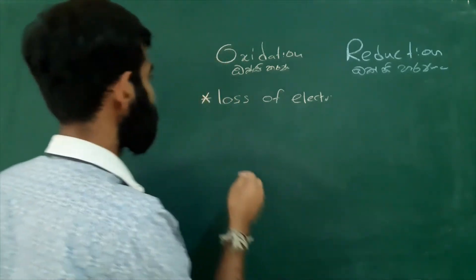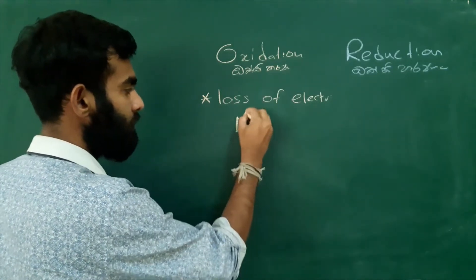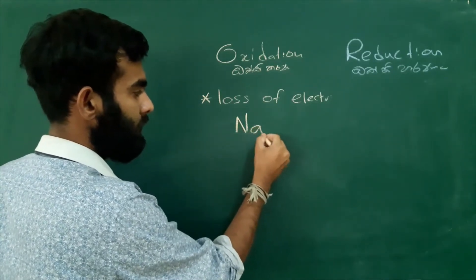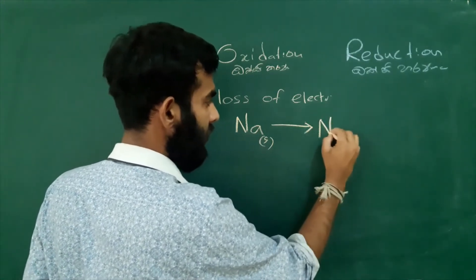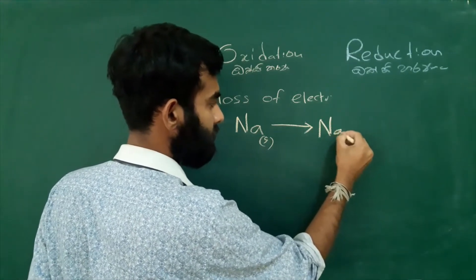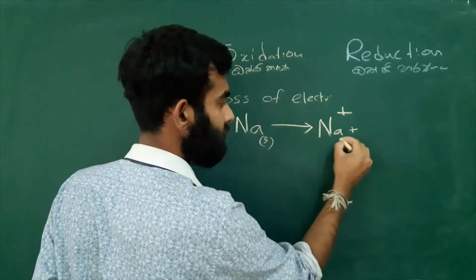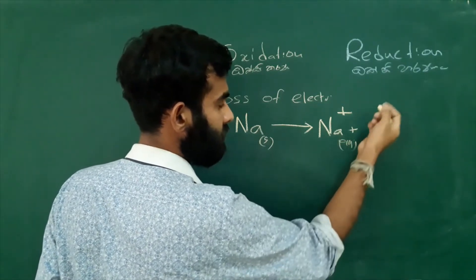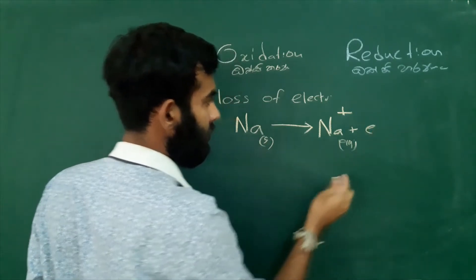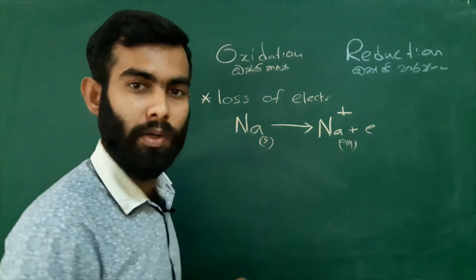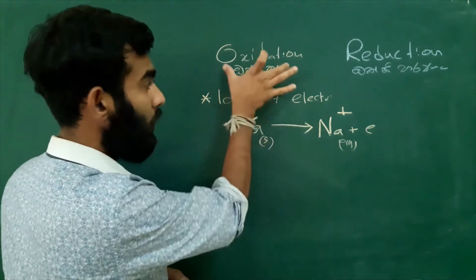For example, consider sodium — sodium solid. It will release an electron and form a sodium ion. So it releases one electron. We call this process oxidation.